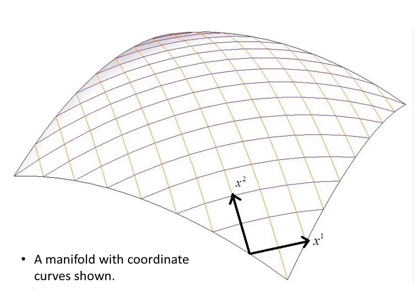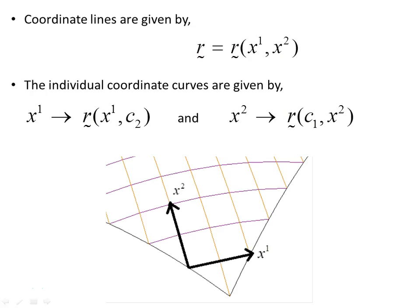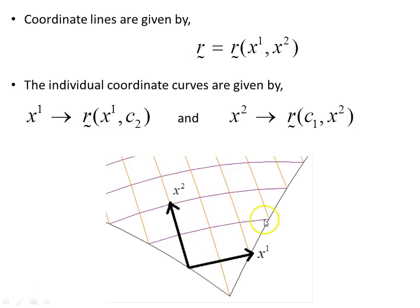Here's a manifold with a coordinate curve shown in the x1 and x2 directions. The coordinate lines in general are given by a position vector which is a function of x1 and x2. The individual coordinate lines in the x1 direction are given by R as a function of x1 where x2 is held at a fixed constant value c2. For each value of x2, this describes the coordinate line in the x1 direction.